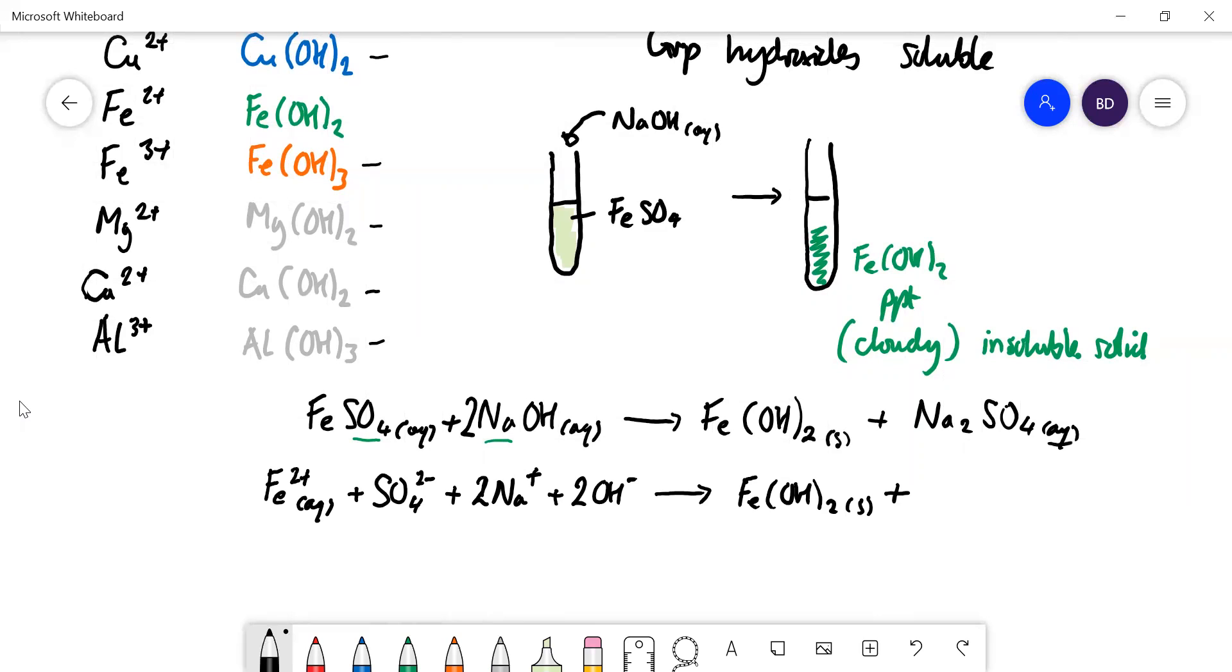Let's see if we've got any spectator ions. The spectator ions are ones that don't change - they're the same on both sides of the equation. We can see that nothing happens to those sulfate ions, they're in aqueous solution, and nothing happens to those sodium ions.